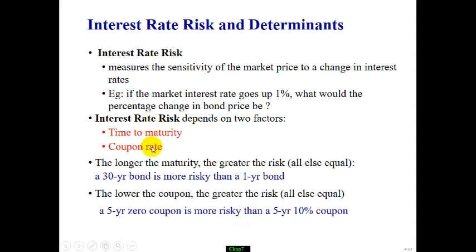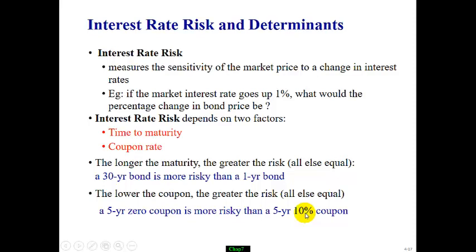The two major factors that affect interest rate risk are time to maturity and coupon rate. Generally speaking, the longer the maturity, the greater the interest rate risk — a 30-year bond is riskier than a one-year bond. The second factor is coupon rate: the lower the coupon rate, the greater the risk. So a zero coupon bond is riskier than a five-year 10% coupon bond.